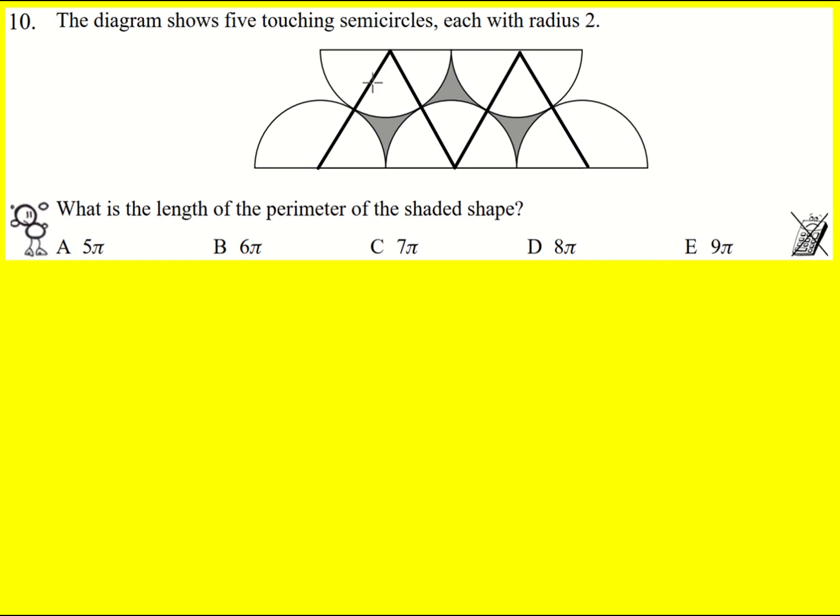And these will be equilateral triangles because this is two and this is two, this is two and this is two, they're all two, all these radii lengths.